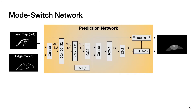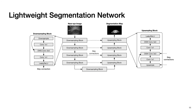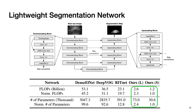Here we show the architecture of our mode switch network. It has three inputs: event map, edge map, and ROI from the previous prediction. The event map and edge map are concatenated and fed into the first three convolutional layers. The previous ROI is then concatenated with the flattened intermediate feature to predict the final ROI. On top of acceleration from the multi-mode switching algorithm, we further accelerate the eye segmentation stage with a lightweight segmentation network using an encoder-decoder architecture with depth-wise separable convolution layers to reduce compute cost and model size. Our model is orders of magnitude smaller than state-of-the-art algorithms.